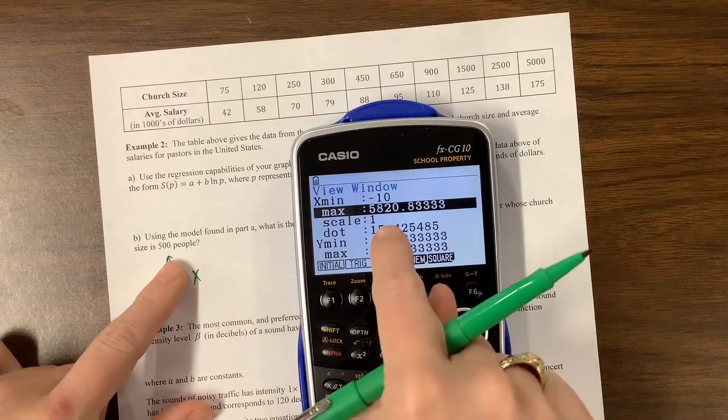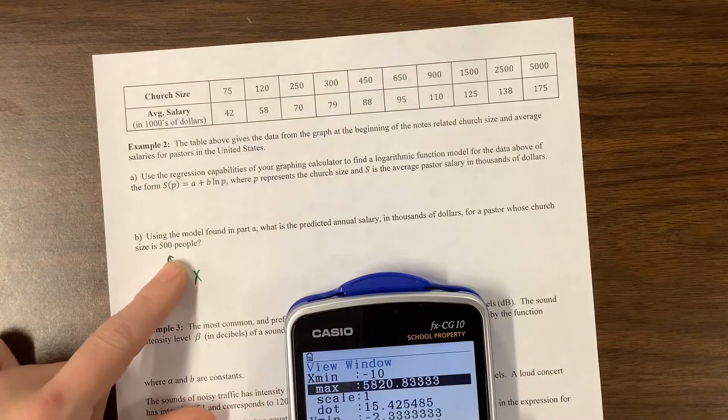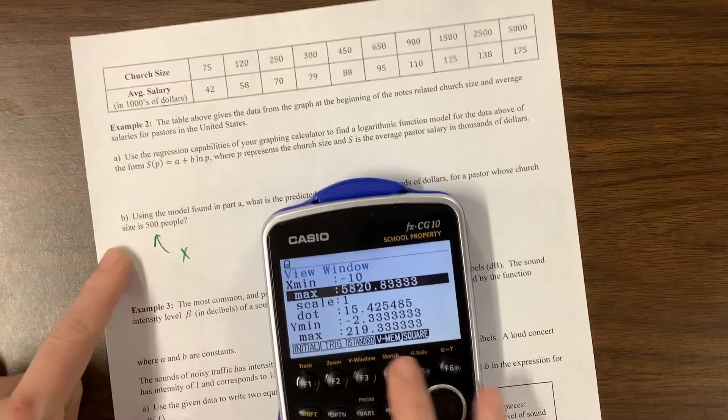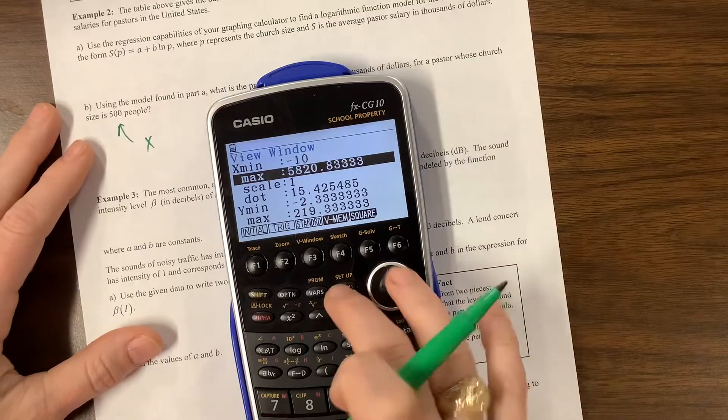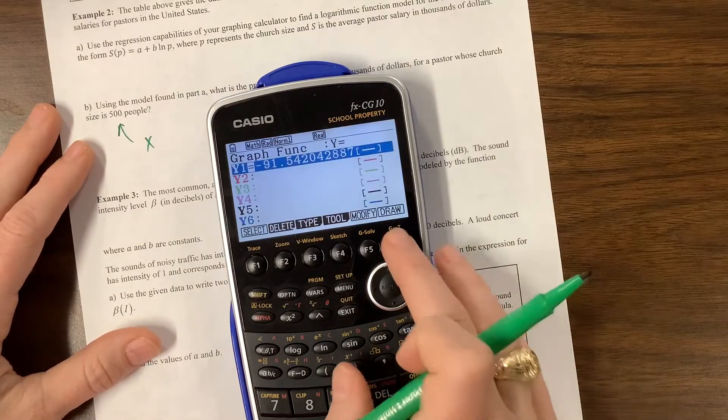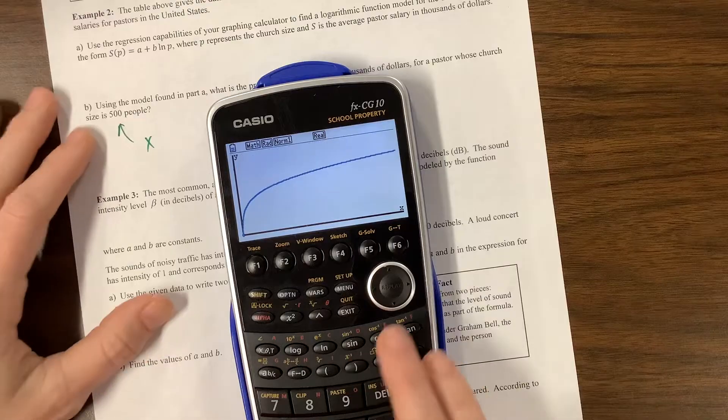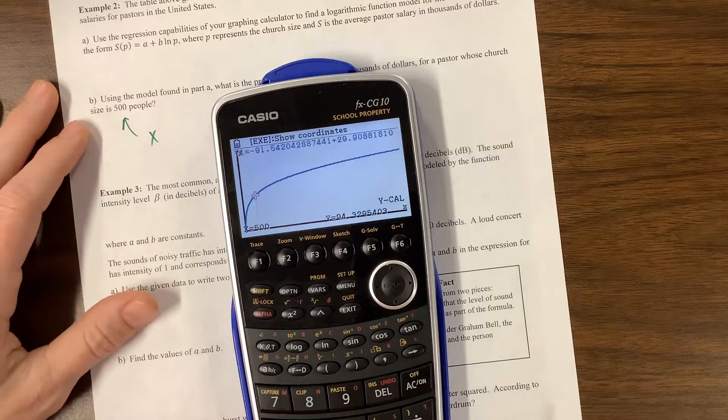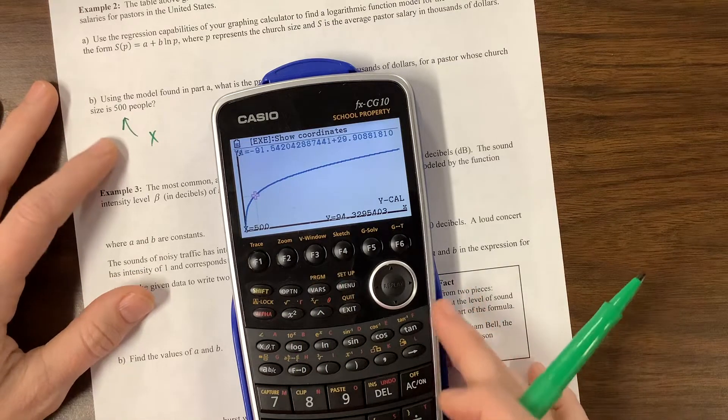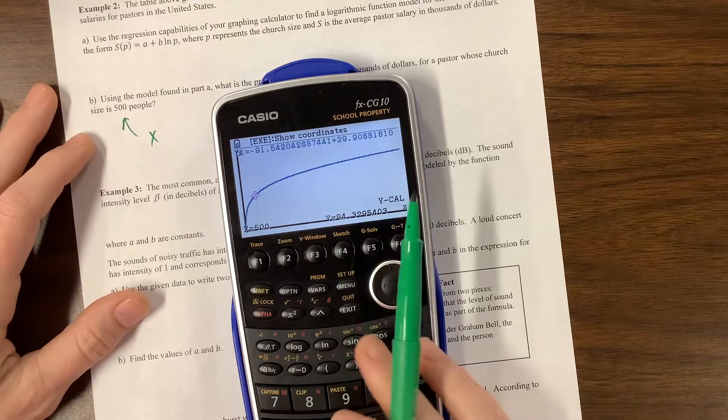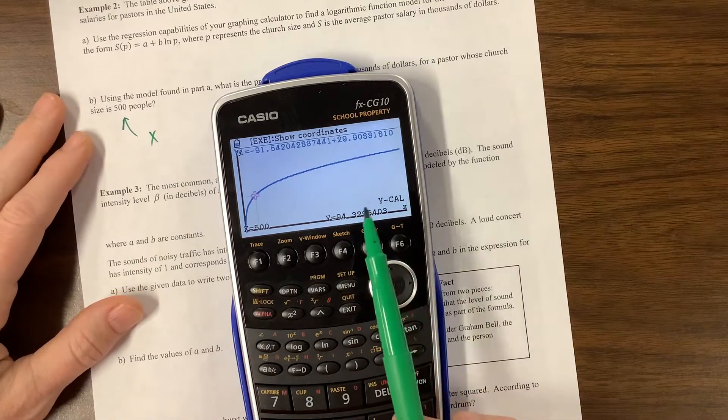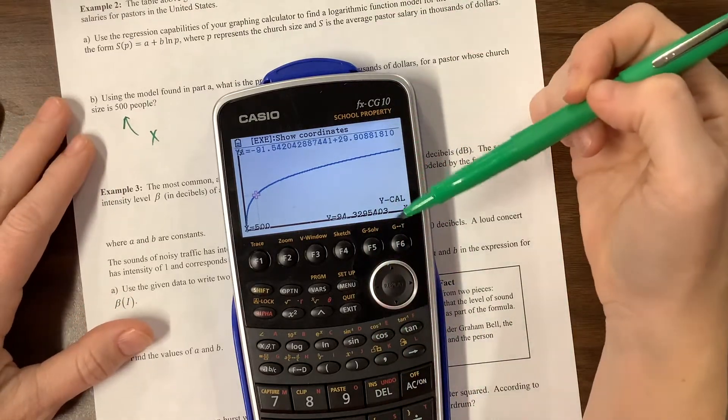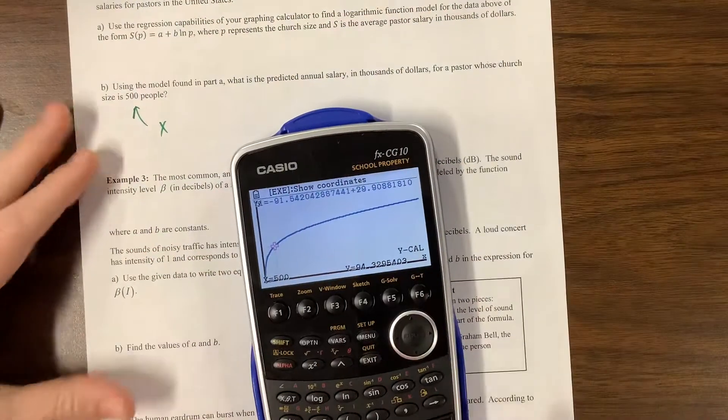I need an x value of 500 people, and we should be able to be in that window. So menu. Nope. What am I doing? Let's go graph. There it is. I can do G-solve and find, come over to Y-cal. So when my x value is 500, I have roughly a salary of $94,000. Is that what they're telling us? That sounds great. I need to switch professions. Not funny. Not funny at all. There we go.